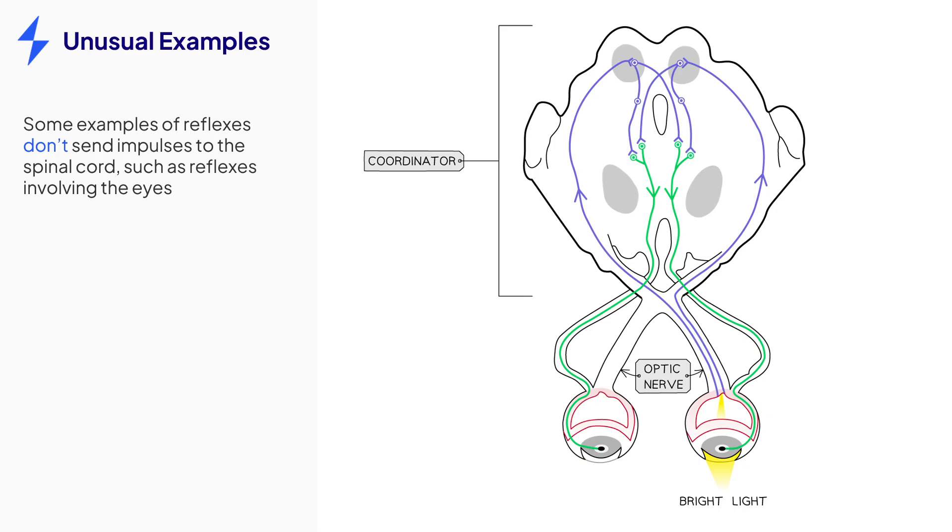It is important to remember that there are sometimes differences in how reflex arcs function for different examples. For example, some reflexes are not coordinated by the spinal cord, such as the example shown here, which involves the eyes. Also, some reflex arcs don't have relay neurons, so the impulse is able to very quickly be transmitted straight from the sensory neuron to the motor neuron.